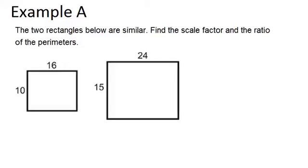The scale factor is the ratio between any two corresponding sides. For example, 24 and 16 are corresponding sides. So the scale factor is 24 over 16, which you can reduce by dividing both the numerator and the denominator by 8 to get 3 over 2.